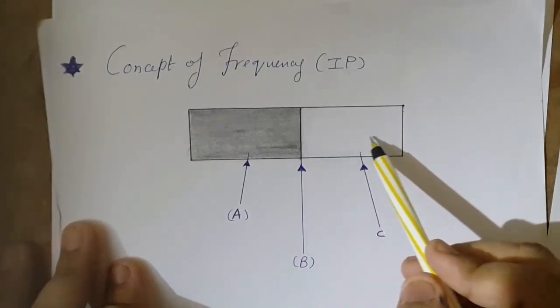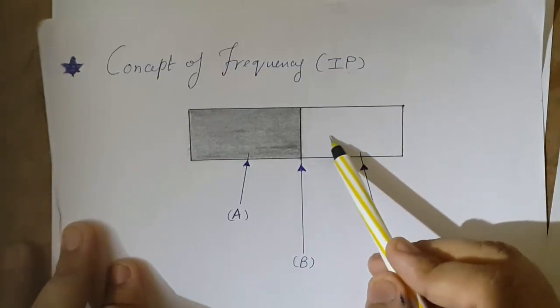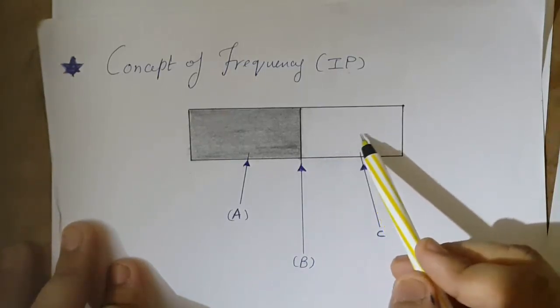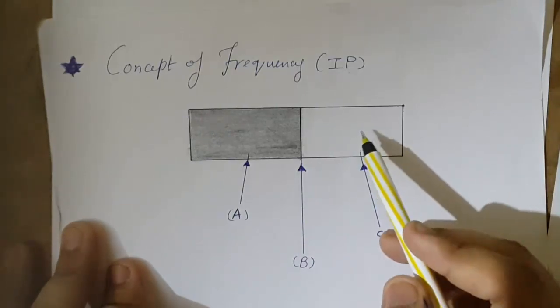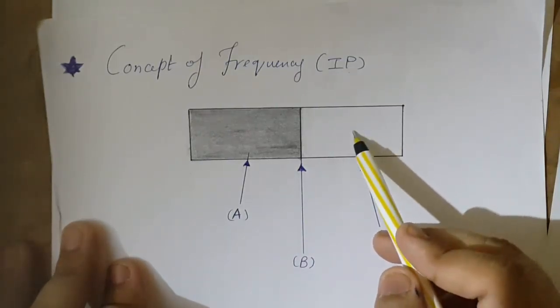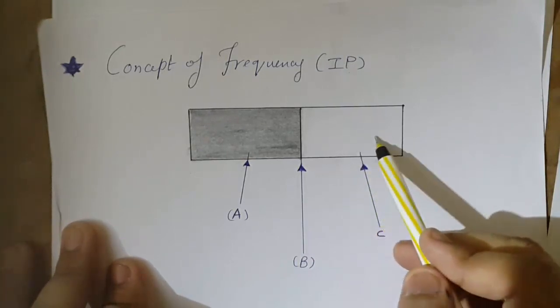As I again travel in this region C, I encounter all the intensities that are white. So this is my low frequency region.